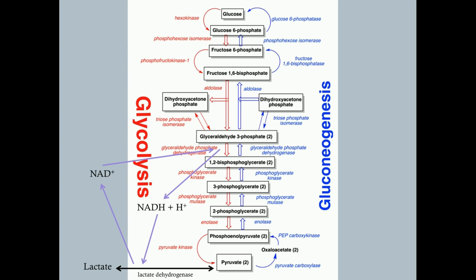After eating a glucose-rich meal, blood glucose rises and the body releases insulin. Insulin does two important things: it helps bring glucose from the blood into cells, and it upregulates enzymes driving glycolysis. So insulin promotes using glucose via glycolysis to make pyruvate, and also promotes storing glucose as glycogen.